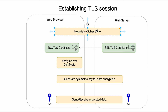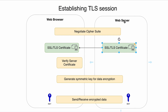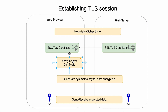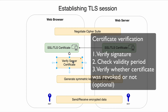Once the cipher suite is negotiated, the web server sends its certificate to the web browser. If there are intermediate certification authority servers, the web server sends those certificates as well, sending the entire chain — usually excluding the root CA certificate, since root certificates are assumed to be located in the web browser's root certificate store. When the web browser receives the certificate, it verifies it by checking the signature, the validity period, and optionally verifying the certificate against the certificate revocation list, which will be covered later in the course.